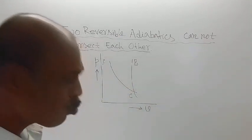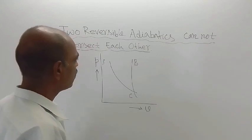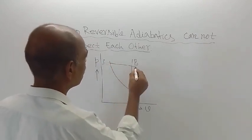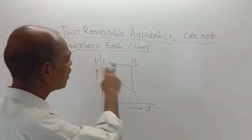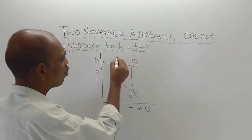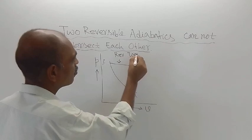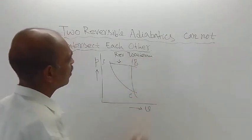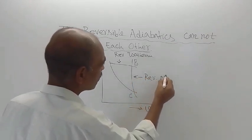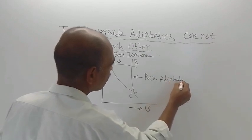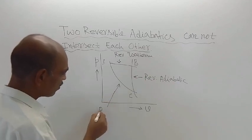Let us assume that there is one reversible isotherm, denoted by line AB. In short, I am writing REV for reversible, then isotherm — reversible isotherm. And this is reversible adiabatic, and this is also reversible adiabatic.